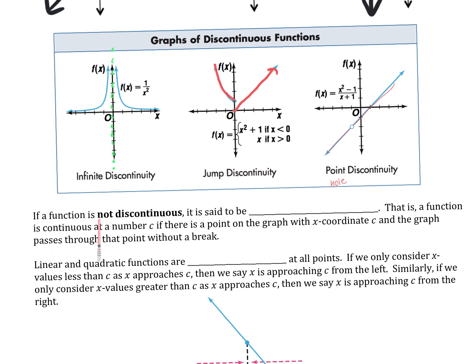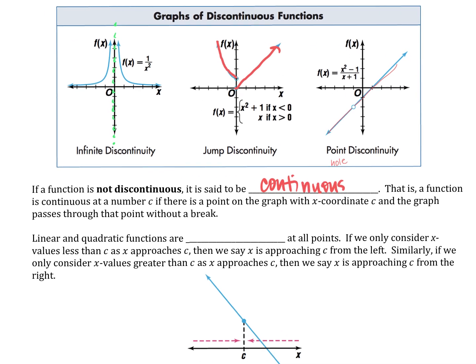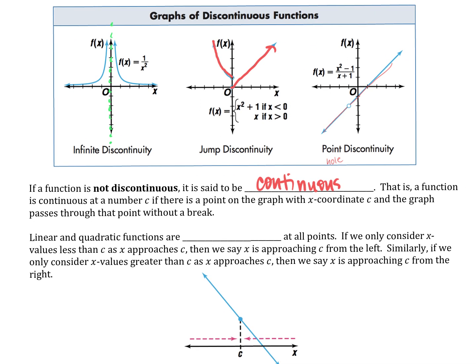If a function is not discontinuous, it is continuous — meaning we don't lift our pen. If you never have to lift your pencil, it's going to be continuous. Linear and quadratic functions are always continuous.